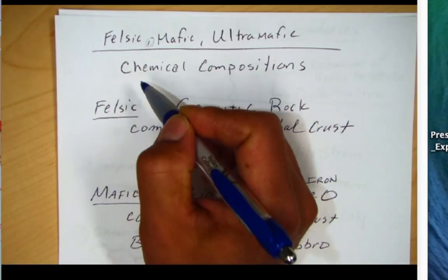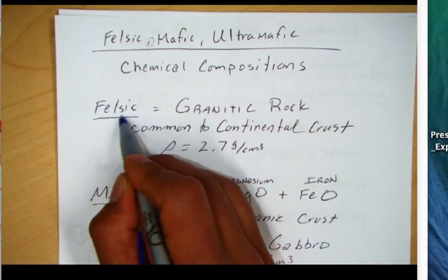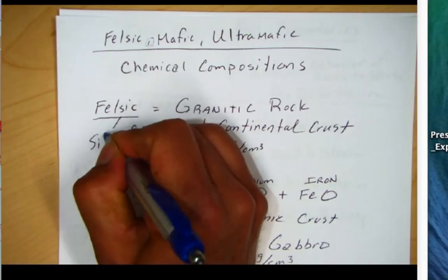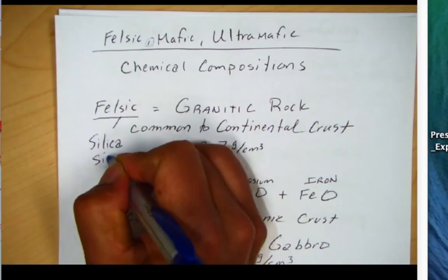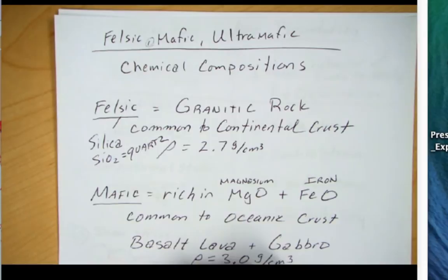For felsic, the key thing is to think about Si — Si is for silica. Silica is basically the mineral quartz, which is SiO2. We'll learn about quartz next week when we do minerals.